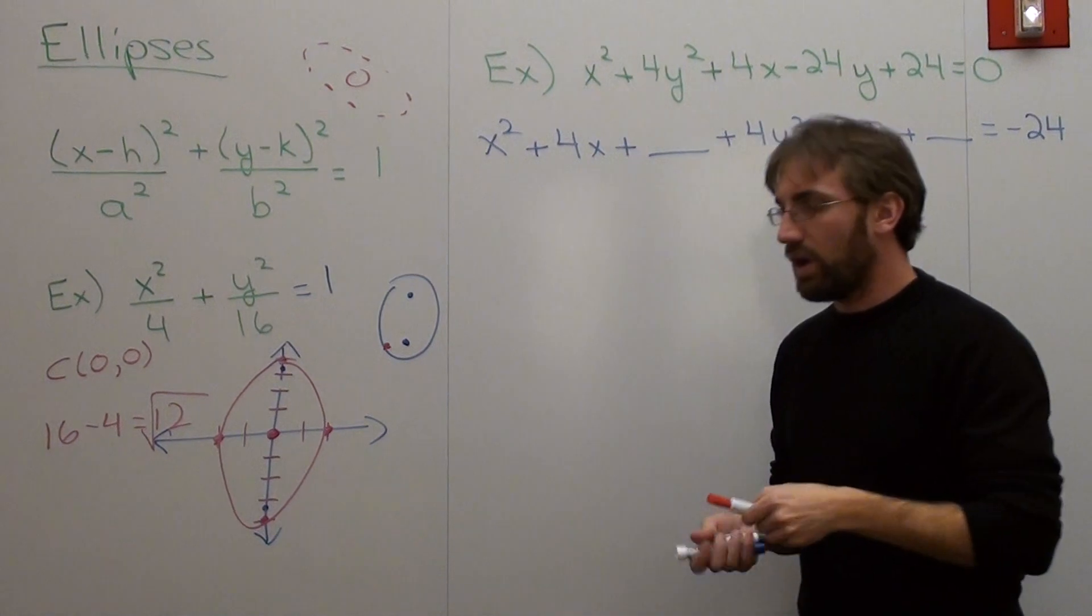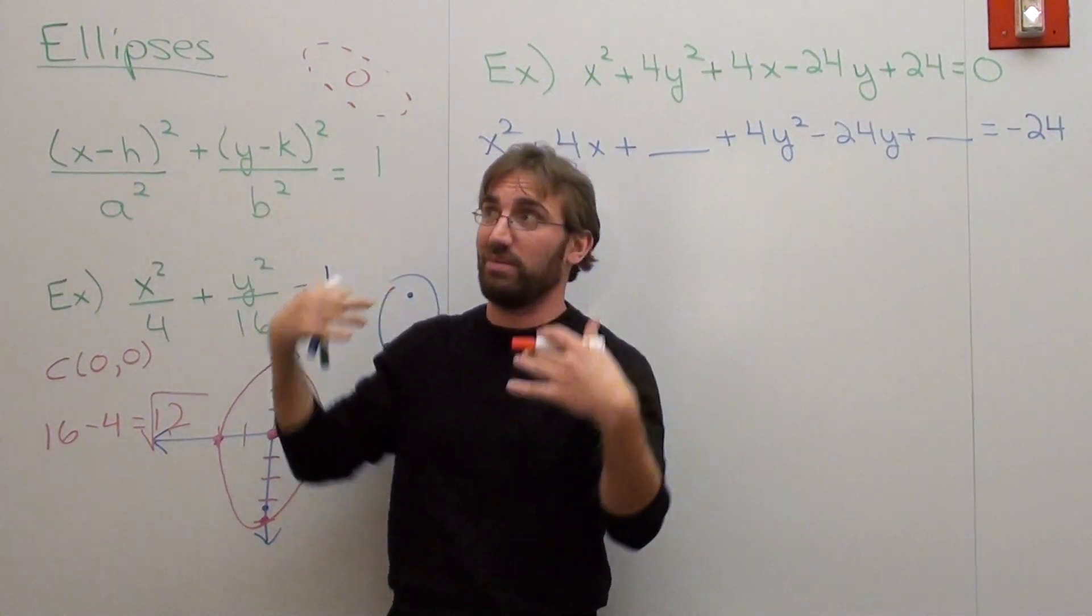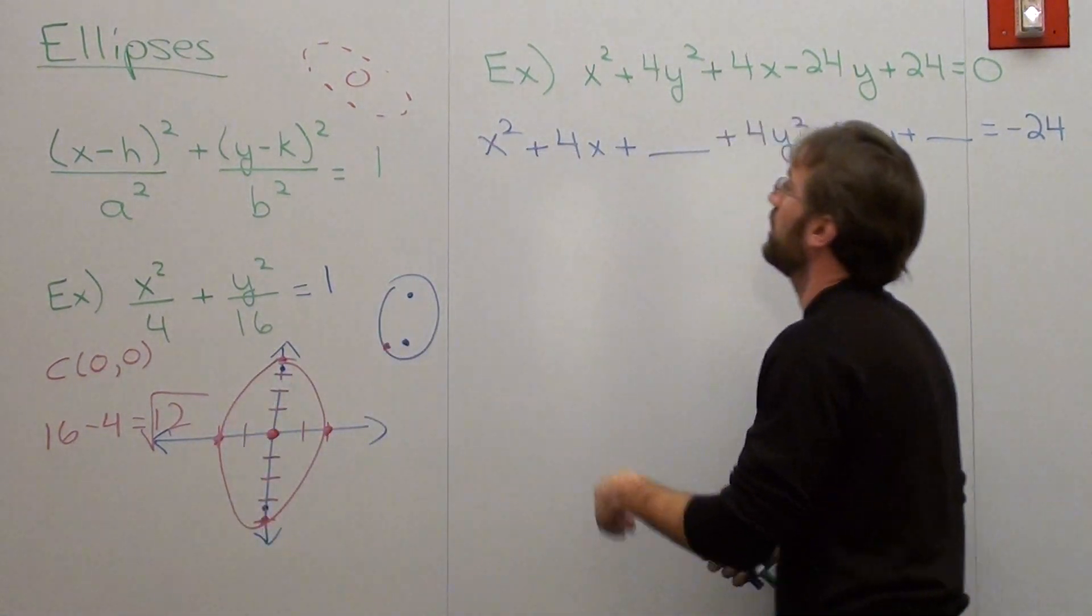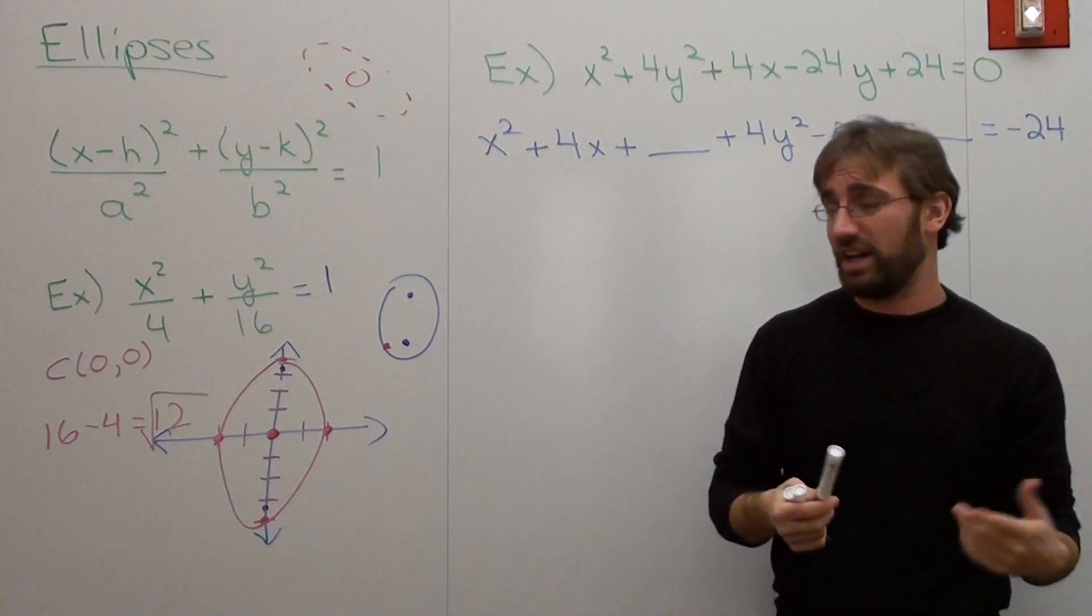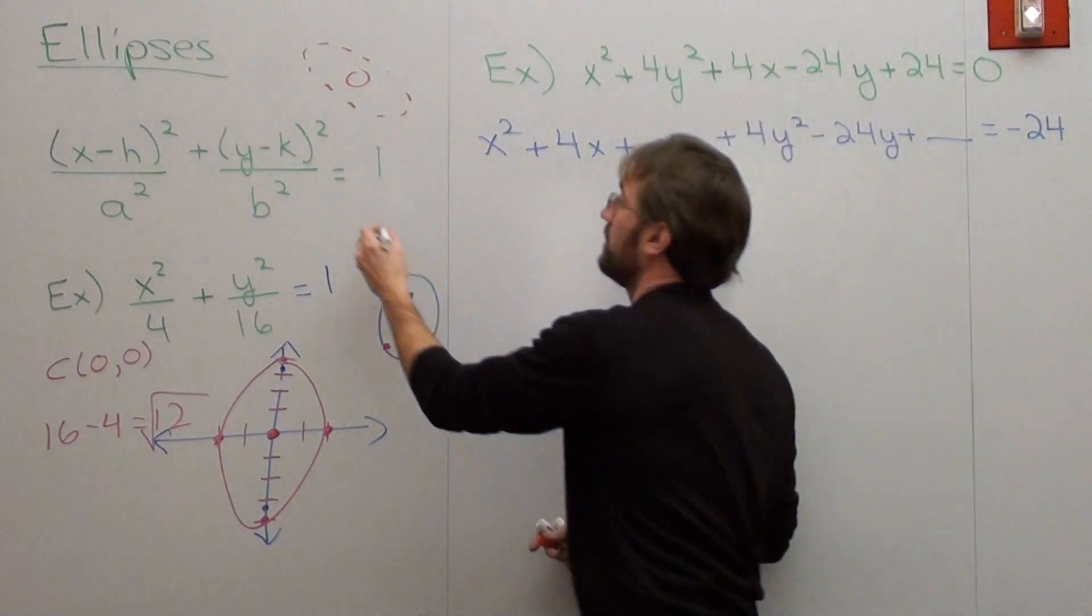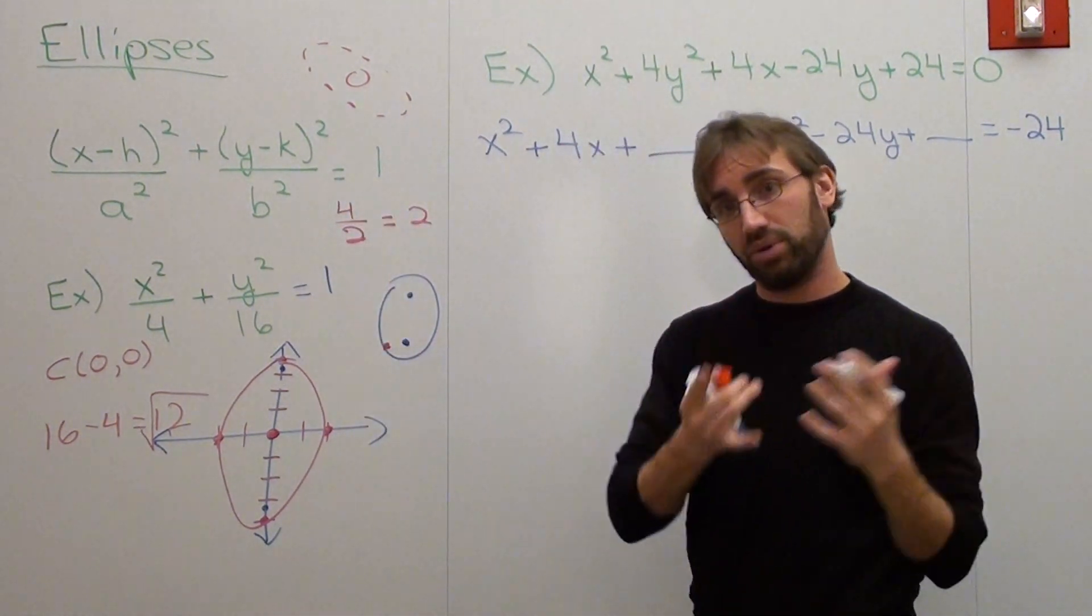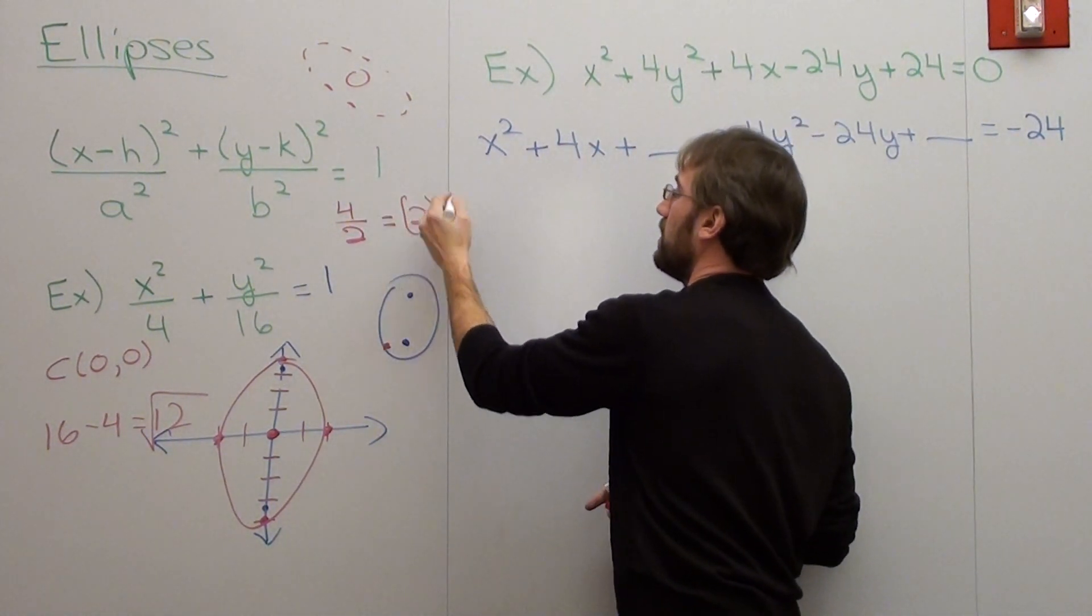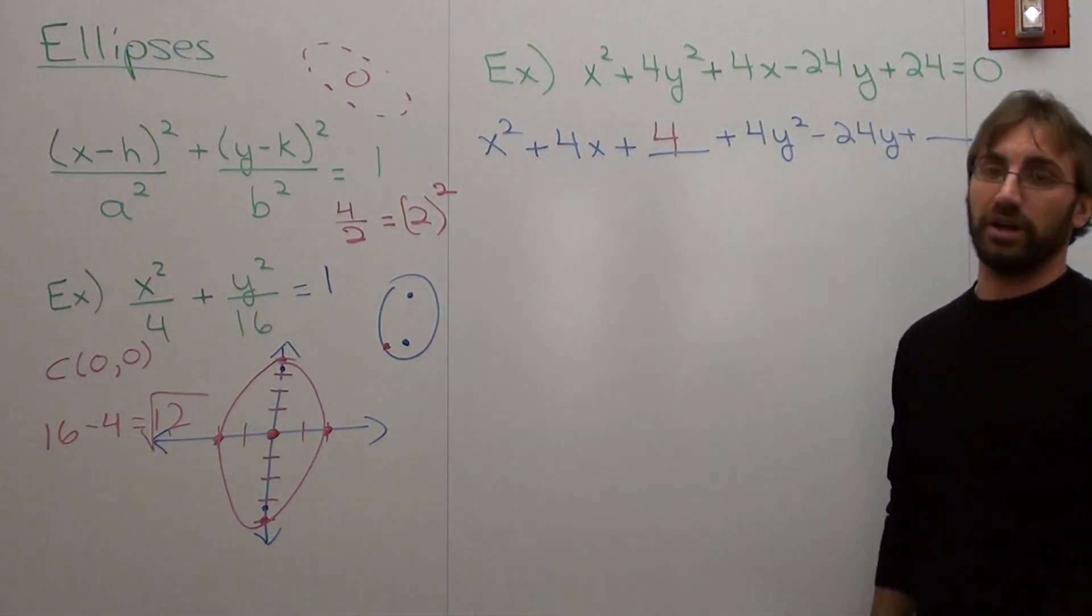Now, what you want to do is you want to complete the square. What that's going to do is it's going to get it into vertex form, which is going to make this problem a lot easier to graph. So what I do if I want to complete the square is I take this middle term, and I divide it by 2, and it's 2. Put that answer in parentheses, and then square it afterwards. And 2 squared is 4. So there you go.